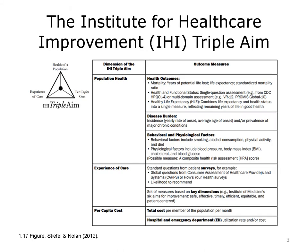One of the reasons that population health has received increased attention in the U.S. over the last five years is that the Institute for Health Care Improvement, IHI, has made its achievement a top-line mission. This influential quality improvement institute, which most large hospitals and health systems actively participate in, has developed something called the Triple Aim.